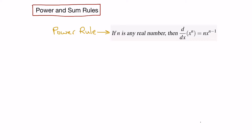Let's start by looking at the power rule. If you have a power where the base is a variable and the exponent is any real number, then you can find the derivative as follows. You multiply the coefficient in front of the x by the exponent and then subtract 1 from the exponent.